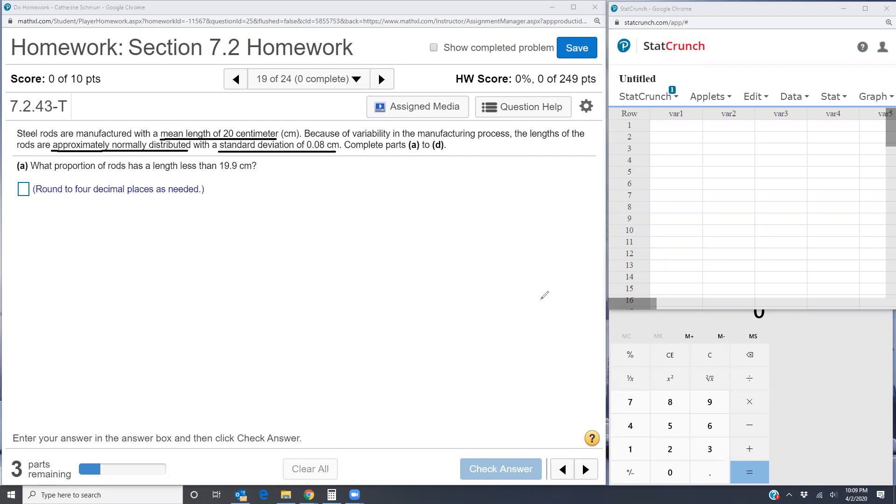So we know that a normal distribution follows this bell-shaped curve. We can get an idea of what our distribution looks like. We know that the mean is going to be right in the center.